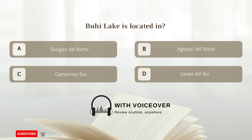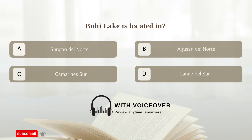Buhi Lake is located in: A. Surigao Del Norte; B. Agusan Del Norte; C. Camarines Sur; D. Lanao Del Sur. Answer C. Camarines Sur.